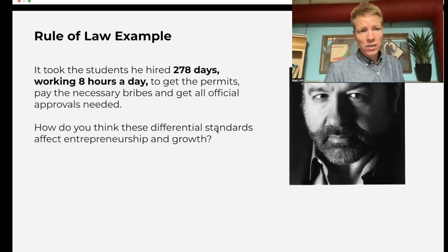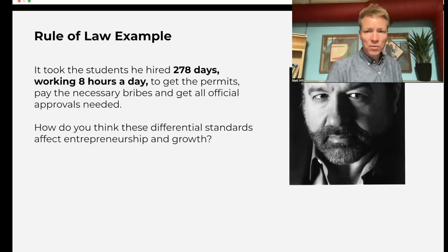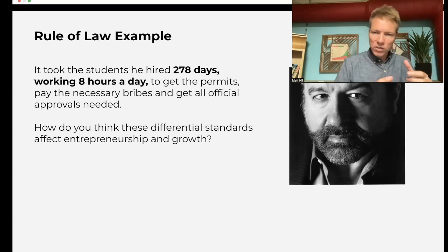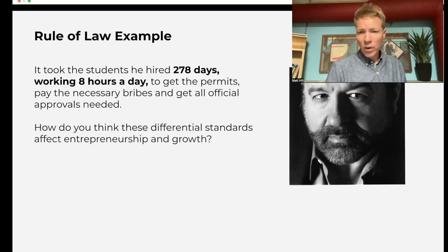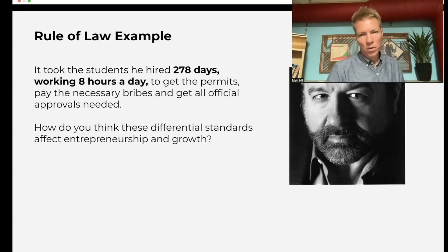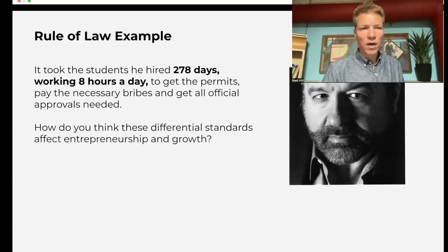You can have your students guess how long it took — it took close to a year of the students working eight hours a day to get all the officials bribed and get approval. In Peru, what this means is that a lot of small businesses are locked out of the formal sector. They're still operating — maybe it's a food stand, or someone printing t-shirts in a warehouse kind of illegally — but being locked out of the formal sector hinders those businesses from growing. This is one of the consequences of not having a strong rule of law.